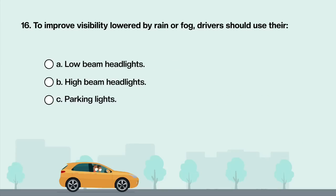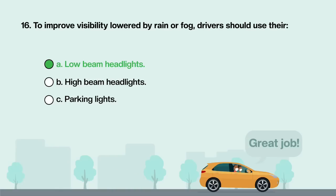To improve visibility lowered by rain or fog, drivers should use their: A. Low beam headlights. B. High beam headlights. C. Parking lights. Answer is A: Low beam headlights.